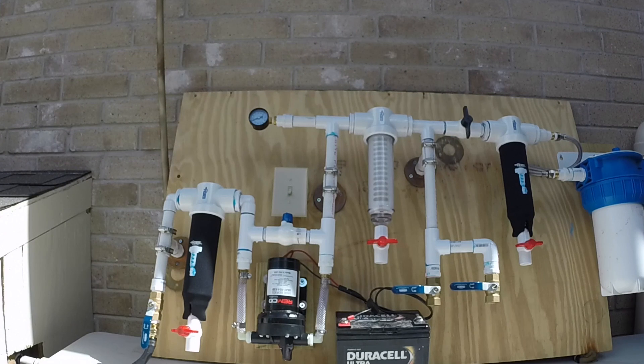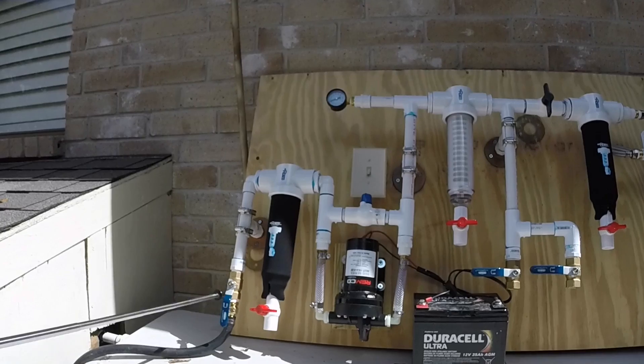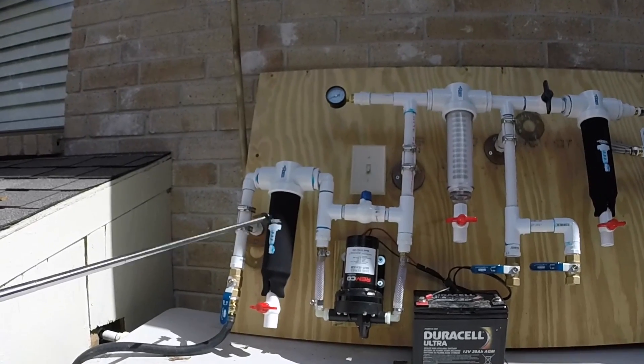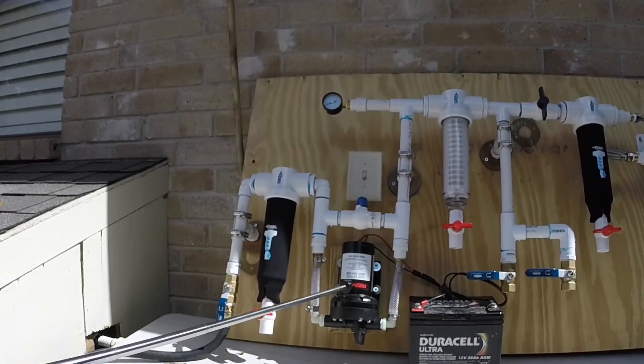So now I will turn on the system and let you see it running. But before I do so, just a real quick explanation of how the system works. The water is going to be drawn in from here. It will go into this first filter which is a 250 mesh filter to prevent any debris from getting into the pump.